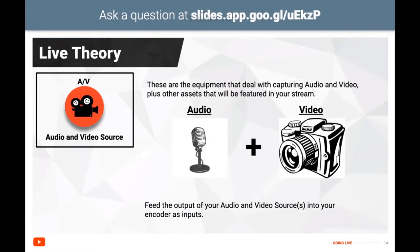First, we have the audio and video sources. These are the equipment that deal with capturing audio and video, and includes other assets featured in your stream, such as images, text, and recorded media. You'll need to feed the output of these audio and video sources into your encoder as inputs.